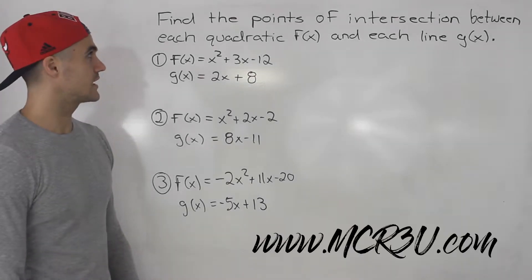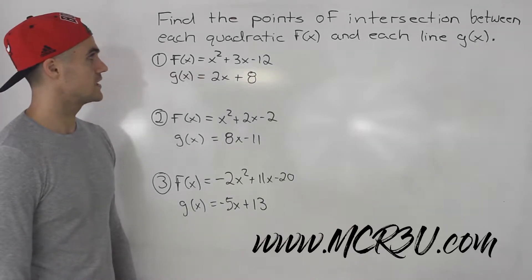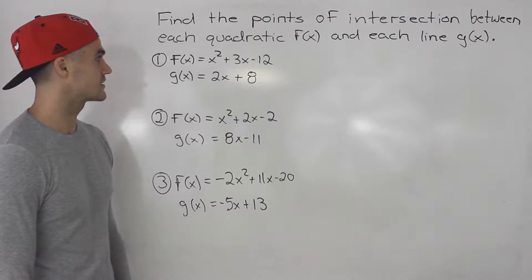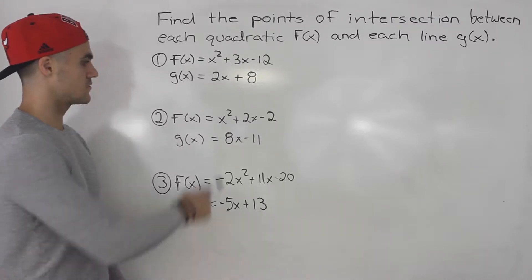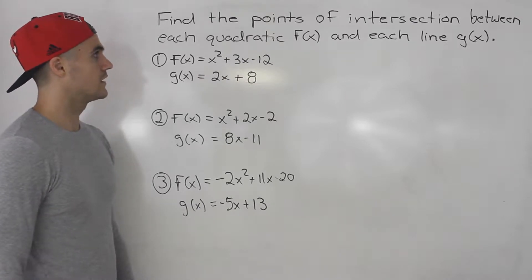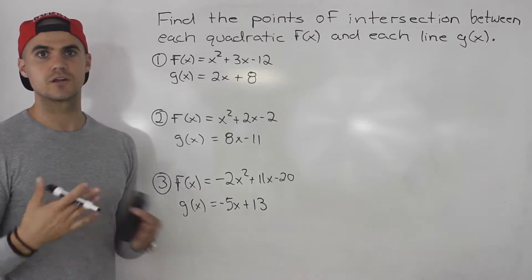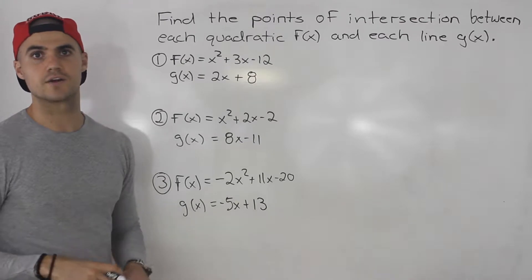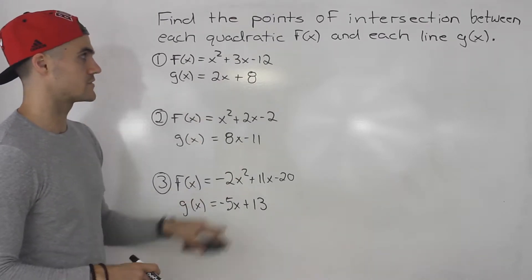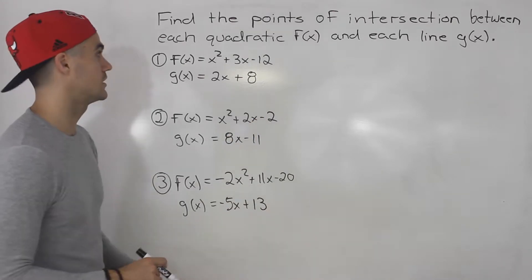Welcome back. Moving on to the next question — we have to find the points of intersection between each quadratic f of x and each line g of x. We have three questions here, and when you're finding the points of intersection between a line and a quadratic, there are pretty much only three scenarios you could run into. We're going to cover all three scenarios and I'll show you visually how each one looks.